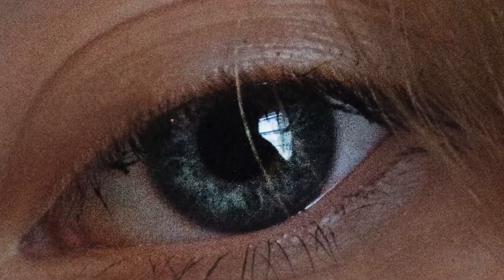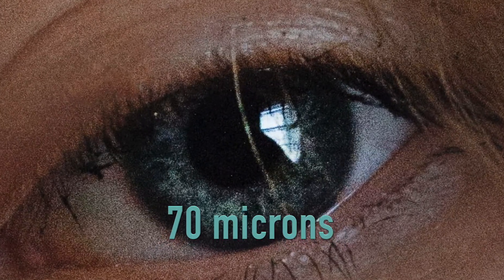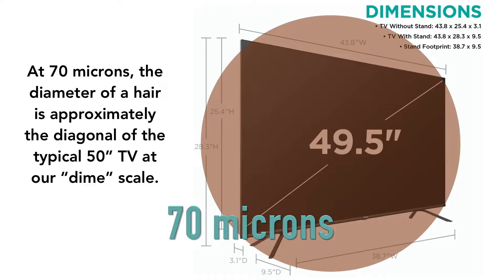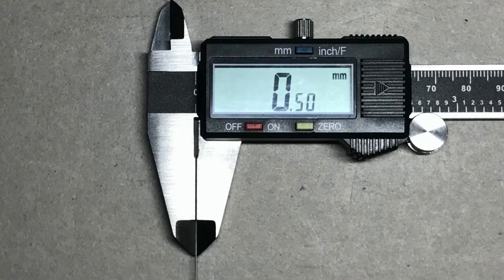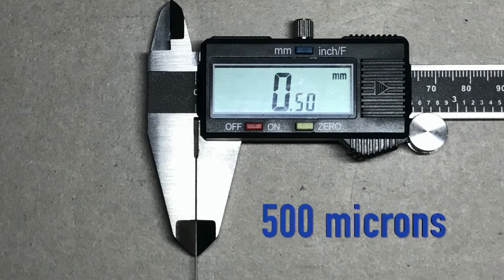Now let's take a look at that classic measuring stick — the human hair. At 70 microns, the diameter of a single strand of human hair is about the diagonal of a typical 50-inch TV on our dime scale. How about 0.5 millimeter pencil lead, the kind we use in our mechanical pencils?